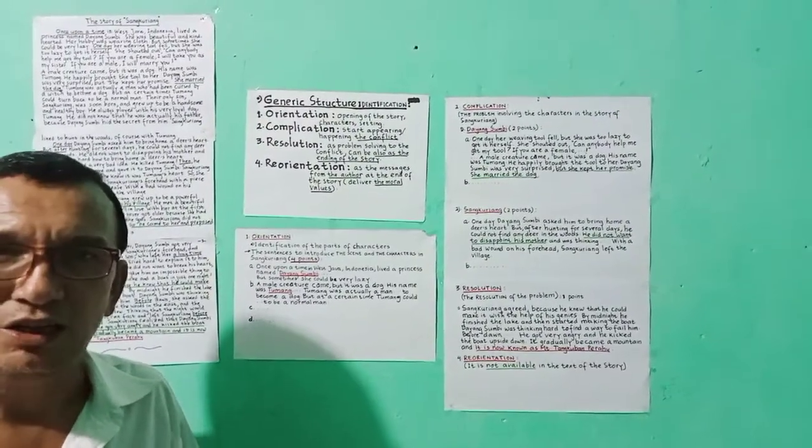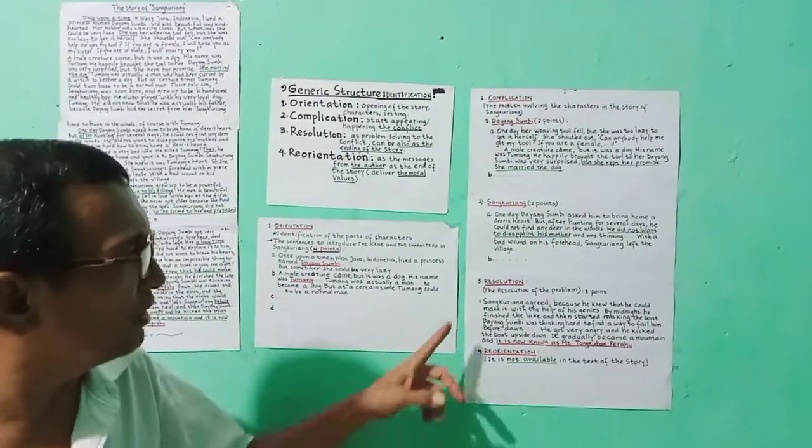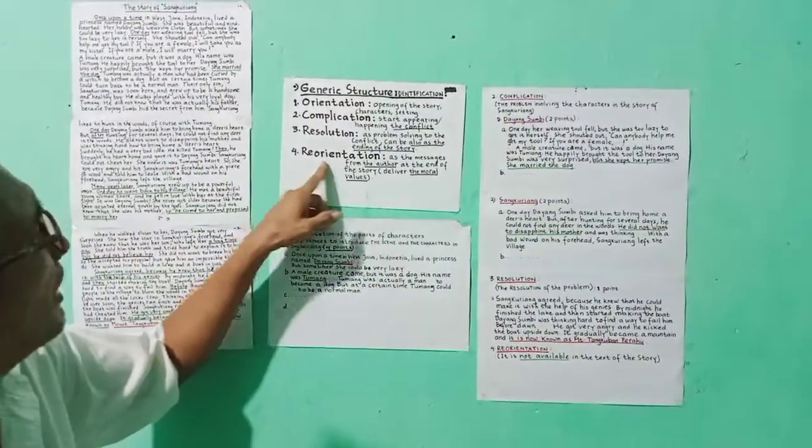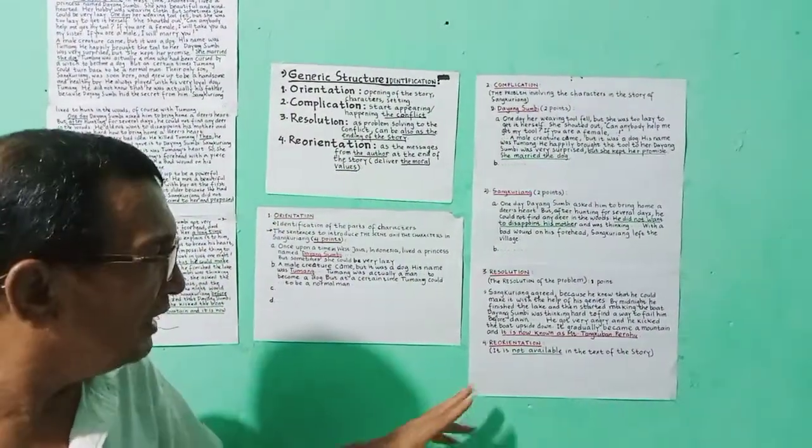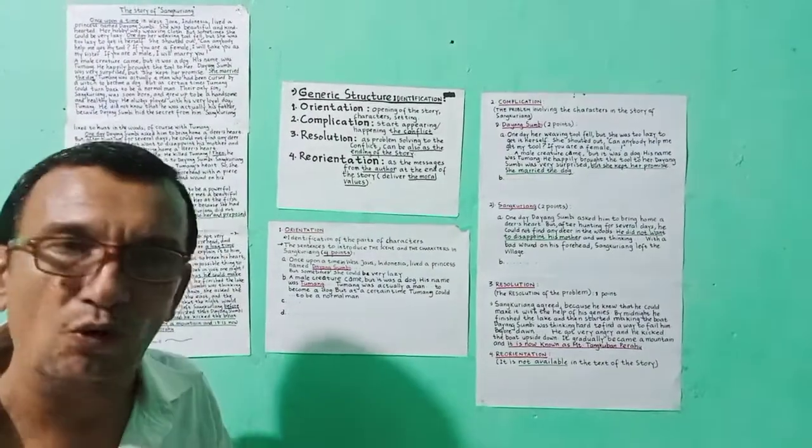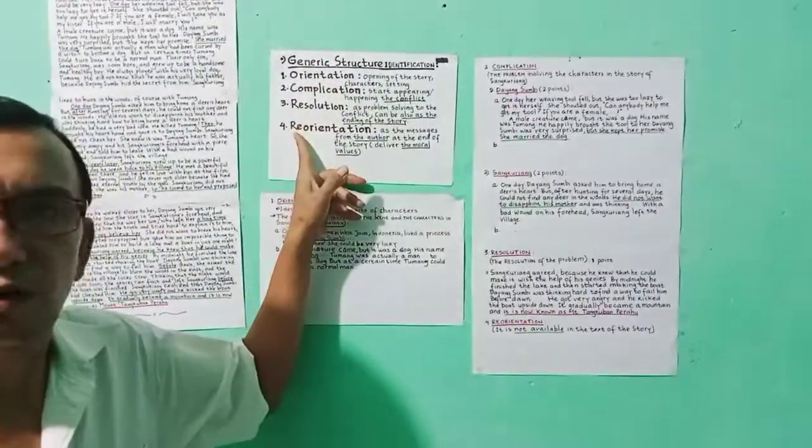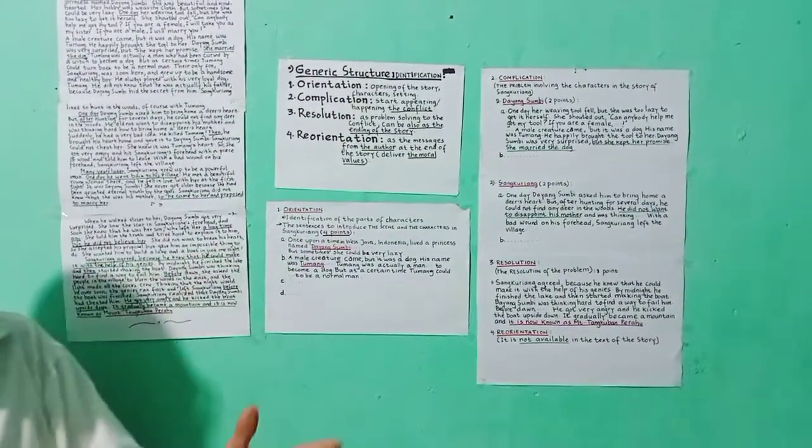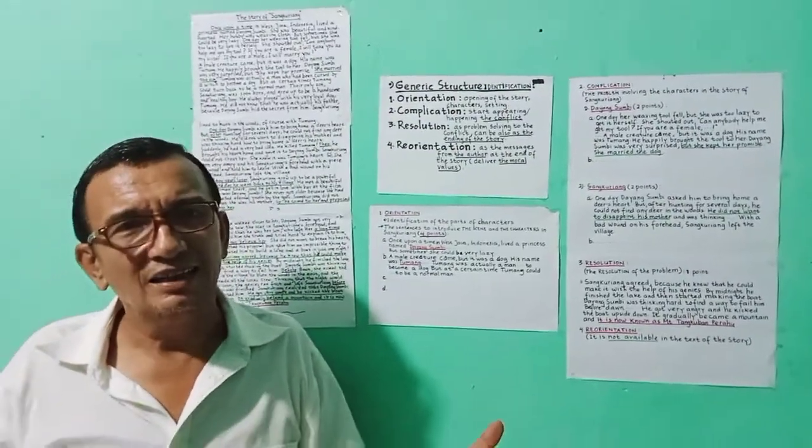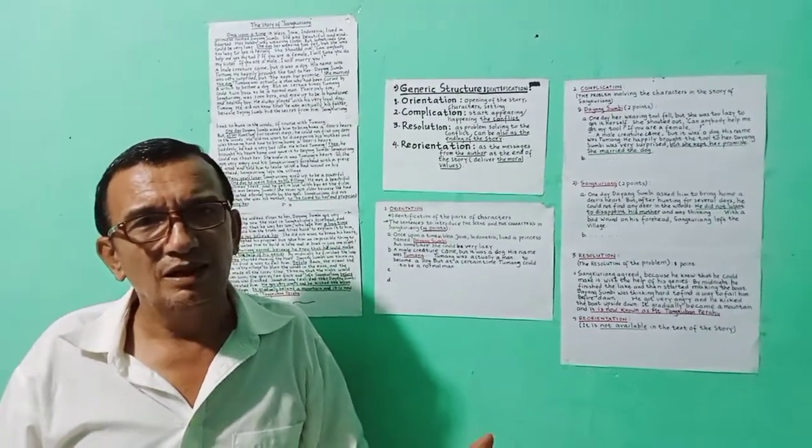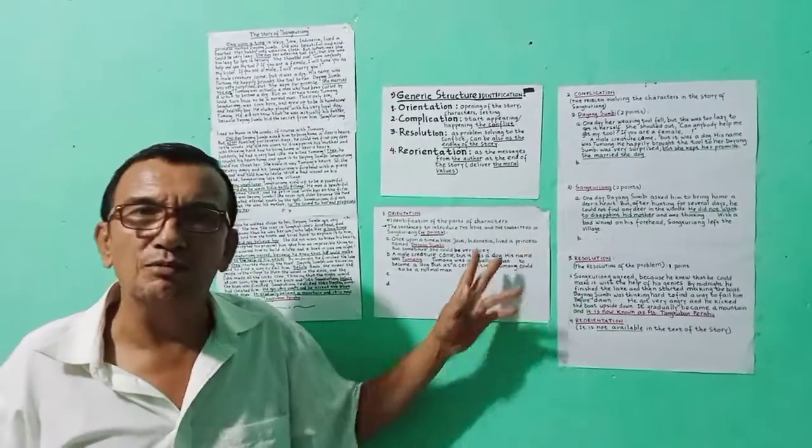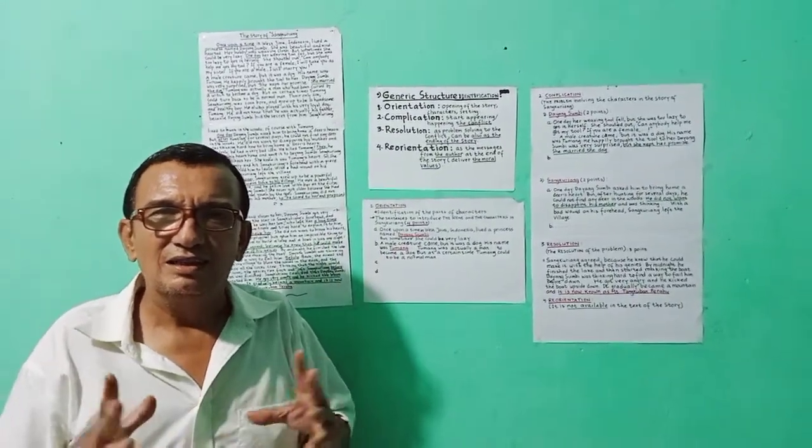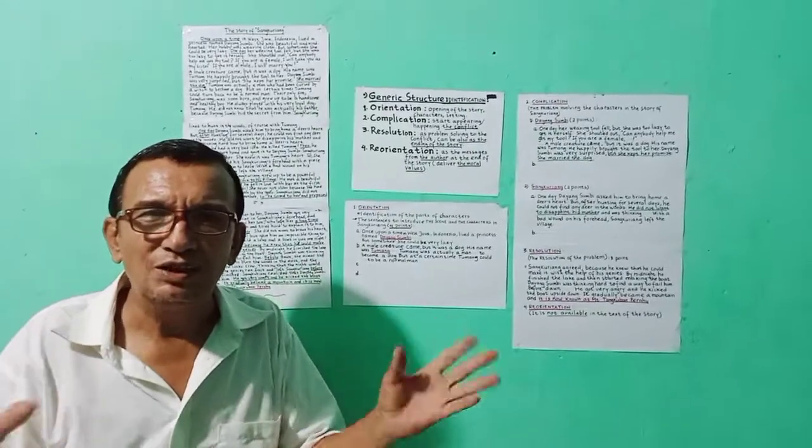That's the story of Sang Kuryang. The end of the story, the resolution. And the part of reorientation, there is not, it is not available in the story. Only three parts we can find in the story. I think that's enough. You can find the other points in the text. And thank you for watching. Bye bye. Goodbye.